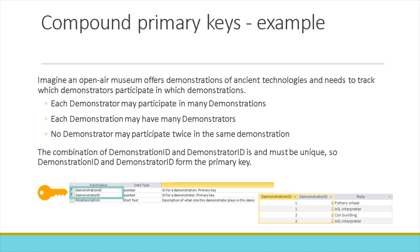Here's an example of compound primary keys. Imagine an open-air museum offers demonstrations of ancient technologies and needs to track which demonstrators participate in which demonstrations. Each demonstrator may participate in many demonstrations, and each demonstration may have many demonstrators, but no demonstrator may participate twice in the same demonstration. The combination of demonstration ID and demonstrator ID is and must be unique, so demonstration ID and demonstrator ID together form the primary key.